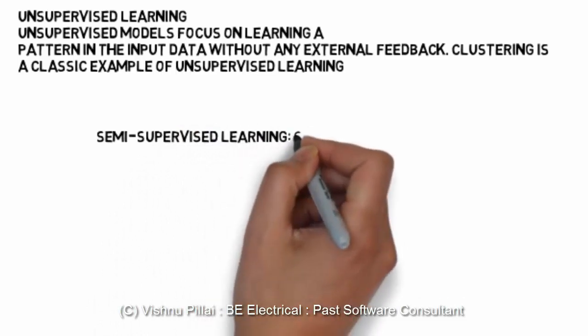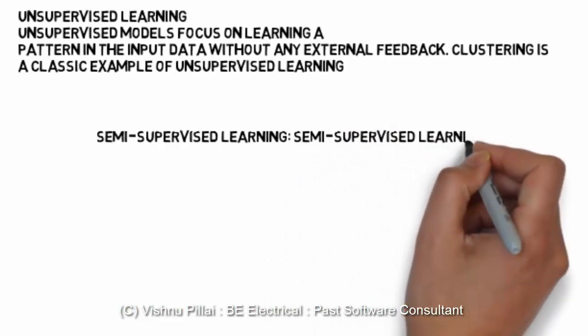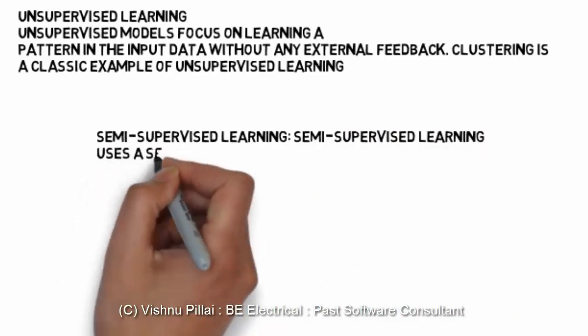The other kind of learning could be semi-supervised learning where there is both supervised learning and unsupervised learning happening at the same time.